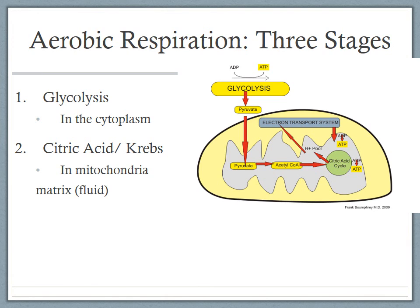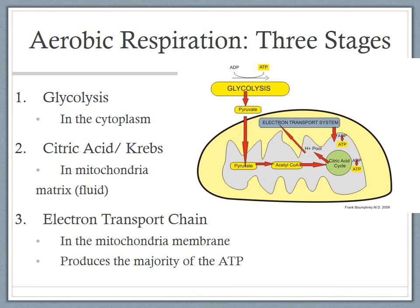Then there is the electron transport chain, which happens in the inner membrane of the mitochondria. That is where the majority of ATP will be produced. There are many proteins embedded in this inner membrane, and that's where the electron transport system is located and where ATP will be created.